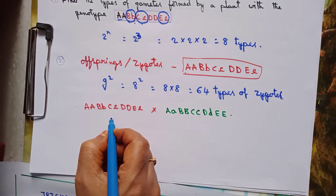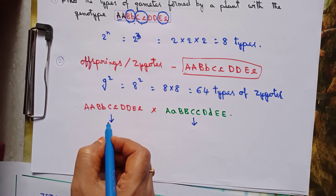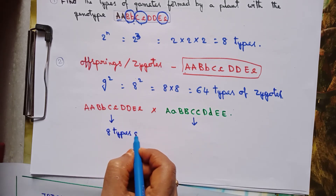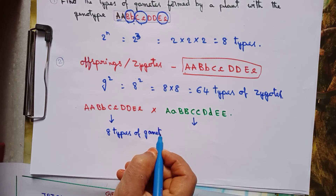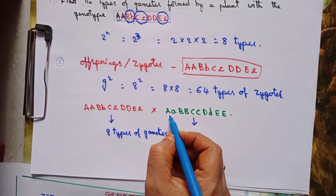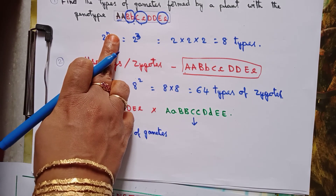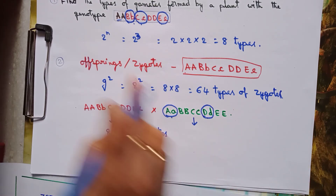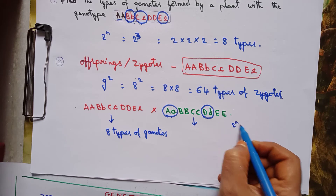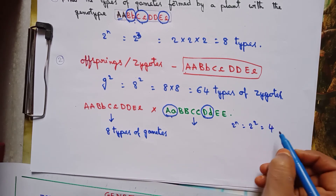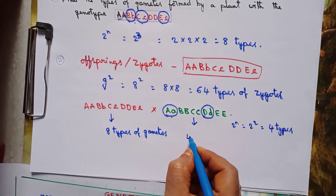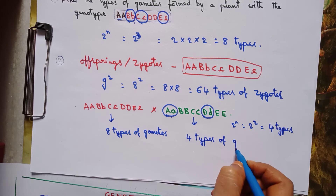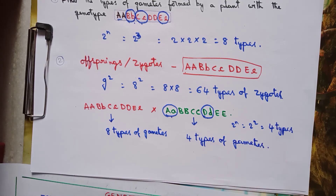We need to find the types of gametes from both plants. From the first plant we already know — 8 types of gametes. From the second plant, applying the formula 2 power n: how many heterozygotes are there? Capital A small a — one, capital D small d — two. So n equals 2, giving 2 power 2 = 4 types of gametes.